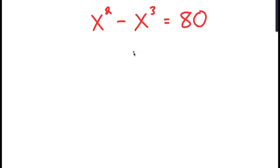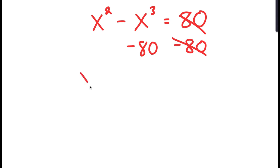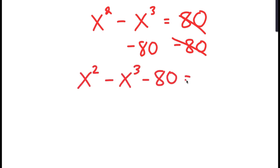To solve this equation, I'm going to first start by subtracting 80 on both sides. So now I get x to the power of 2 minus x to the power of 3 minus 80 is equal to 0.